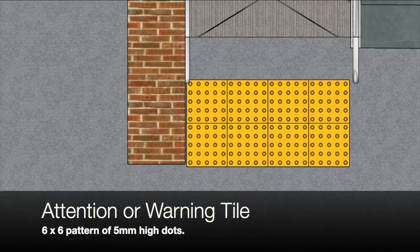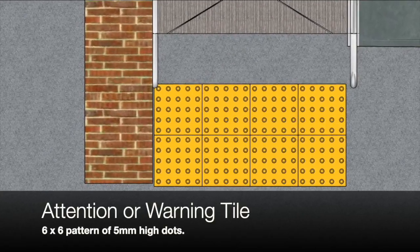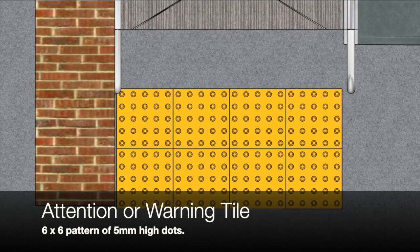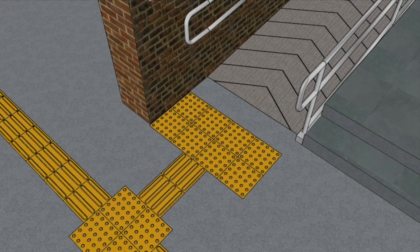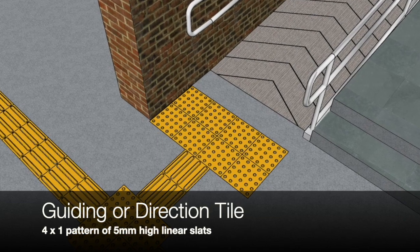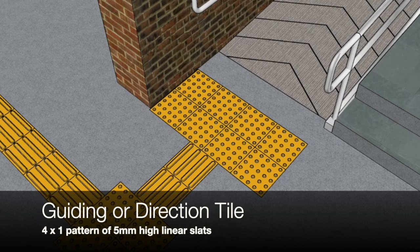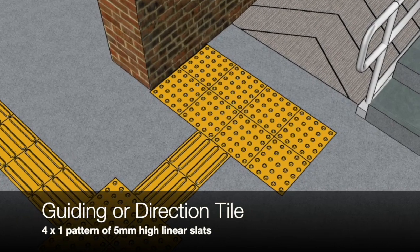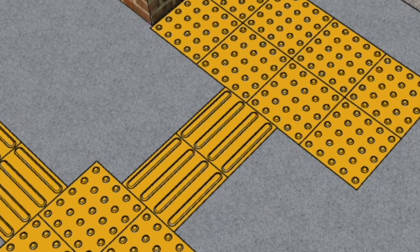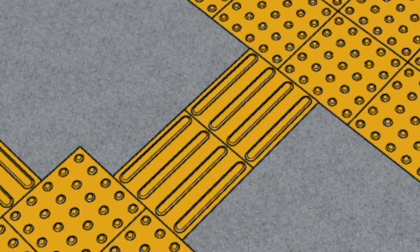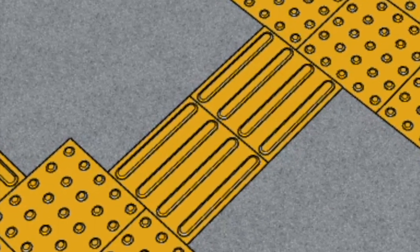Tactile tiles — TGSI. Attention or warning tiles have a pattern of 36 raised dots, 5mm high. These should be placed 300mm from the beginning and the end of each ramp. The guiding or directional tiles have four lines on a 300 by 300 tile, also raised by 5mm, and guide people with visual impairment in the direction they need to go.